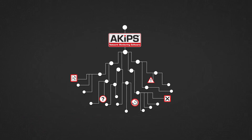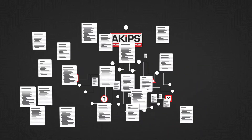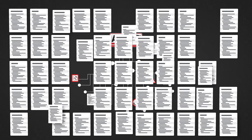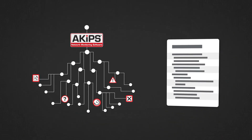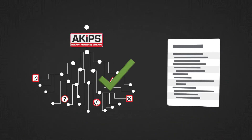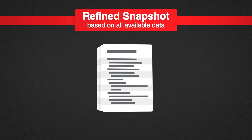These challenges make it impossible to map a network with 100% accuracy. ACIP's understands this and instead filters and sorts the enormous mess of sample data sets, while still being gentle on your network. The end result is a refined snapshot based on all available data to help you make an educated guess of the state of your network.